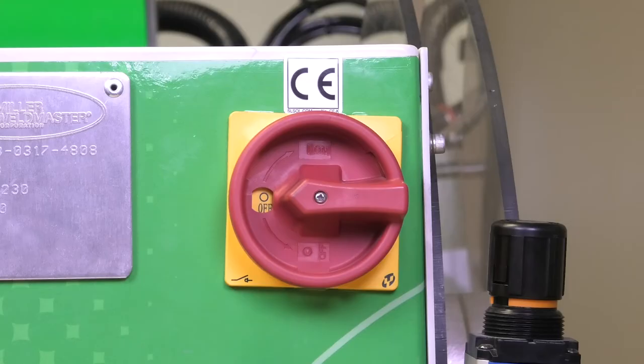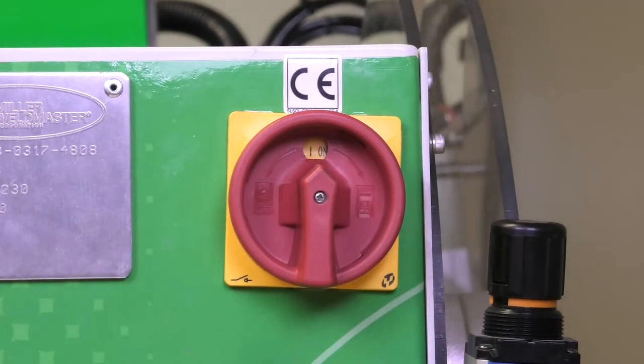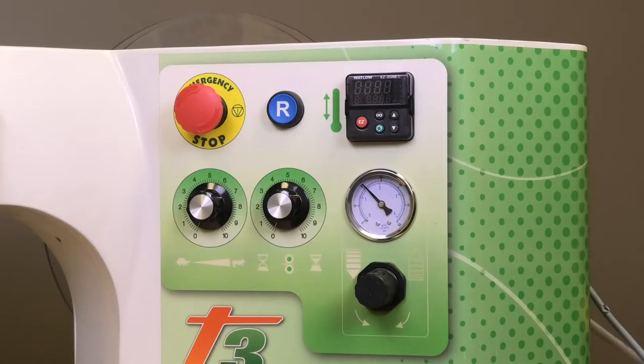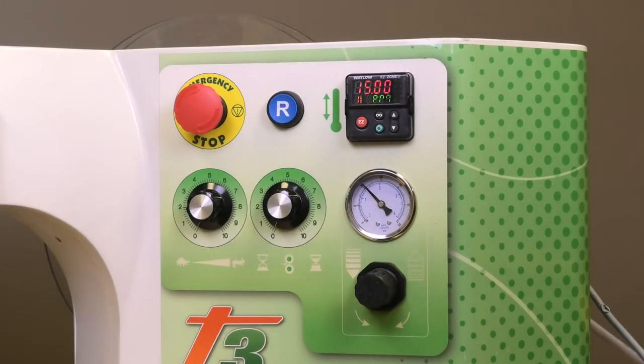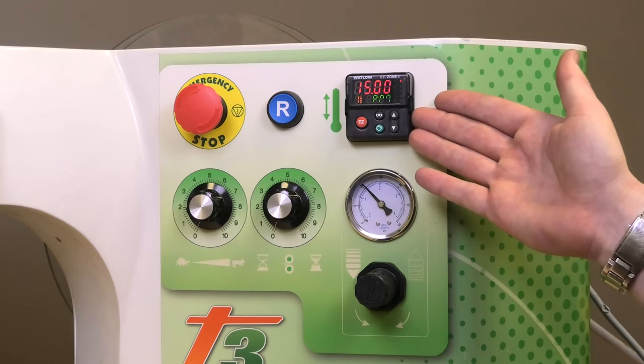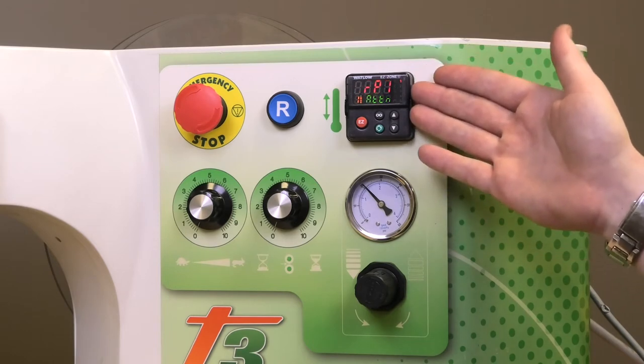After having the machine set, you are ready to turn on the main power breaker. Just give this a switch and power is running through. After flipping the power switch, you must come around to the front and hit the reset button. After hitting the reset button, you'll see the temperature controller light up and show your settings.